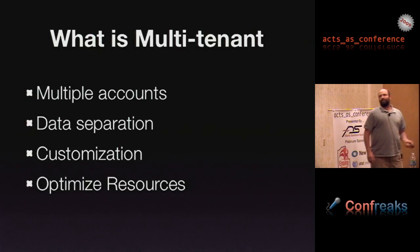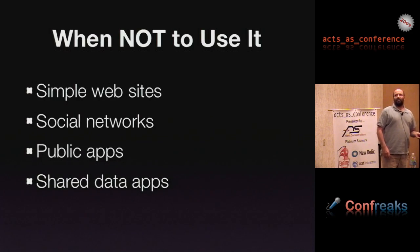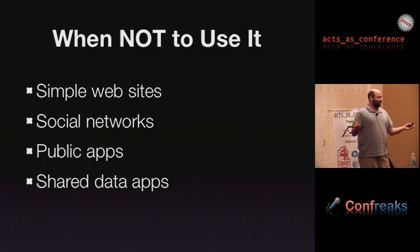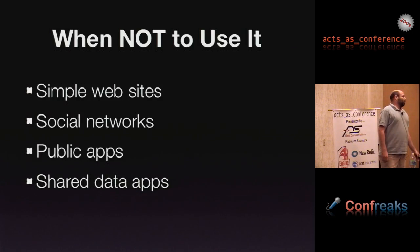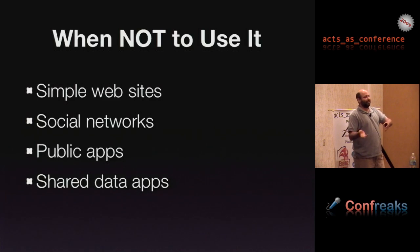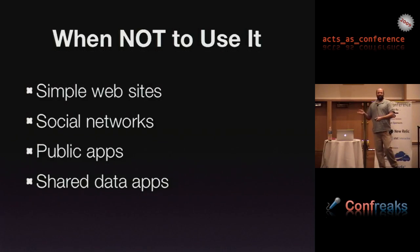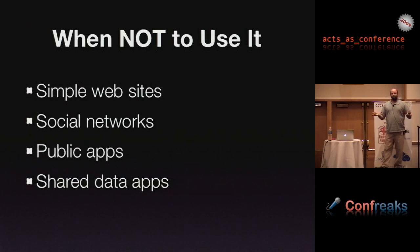When we don't want to use multi-tenancy: a simple public website doesn't need it. Social networks or applications that share a lot of data — the main idea of those applications is sharing data between people, so we don't want to separate it. Applications that are mostly public, like a newspaper application, don't need to be multi-tenant.